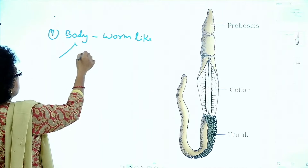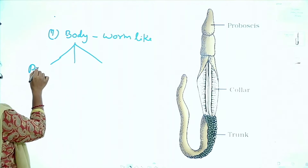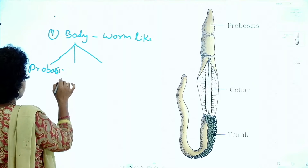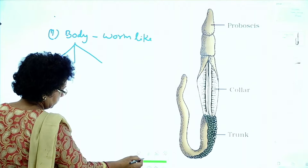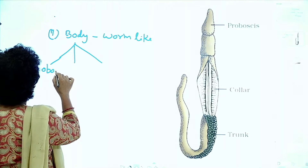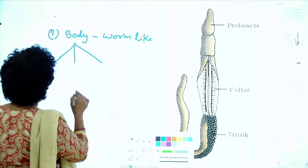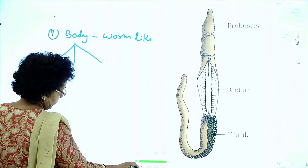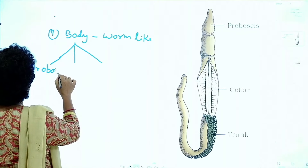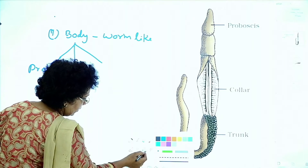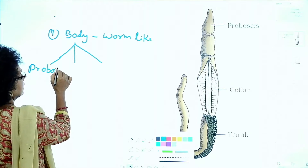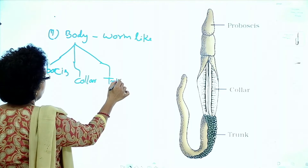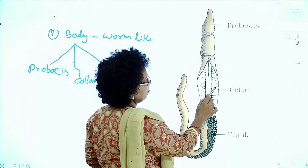The body is divided into three parts: proboscis, collar, and trunk.